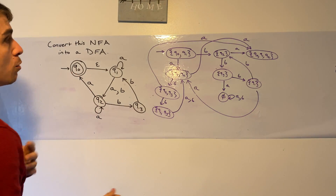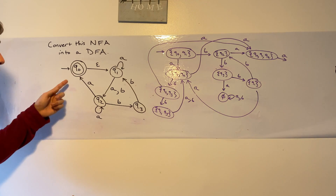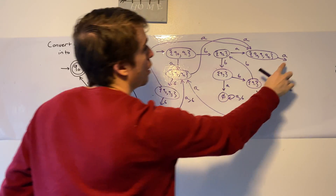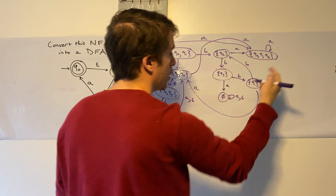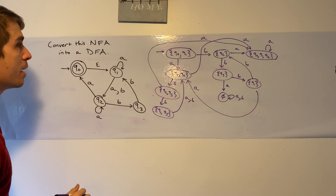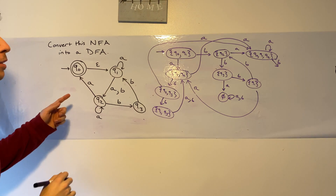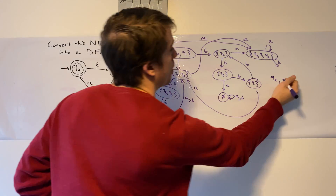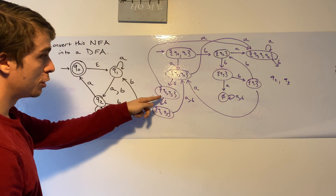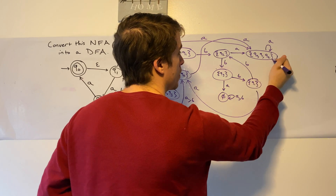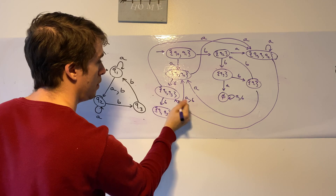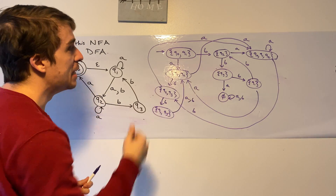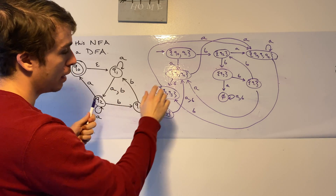The only state left is {Q0, Q1, Q2}. On input A: Q0 goes nowhere, so we do whatever {Q1, Q2} would do on A, which goes to itself — {Q0, Q1, Q2} — since the epsilon closure includes Q0 going to Q1, and Q2 can go to Q0 on A. On input B: Q0 goes nowhere, Q1 goes to Q2, and Q2 goes to Q3. That leads down to state {Q2, Q3}. Now we've handled every single state, so we don't need any more.